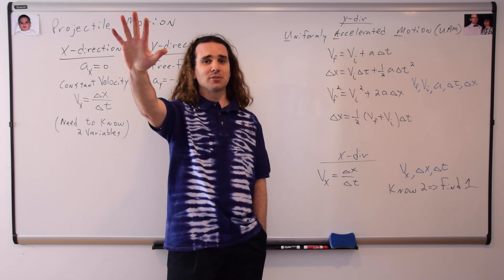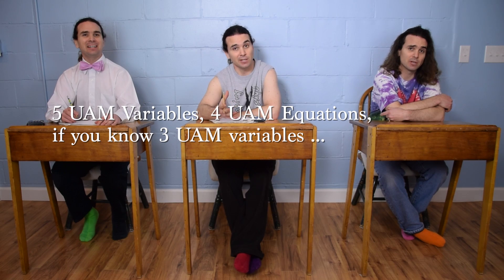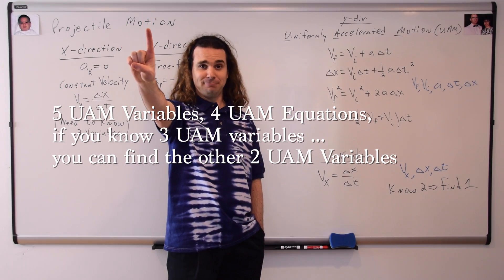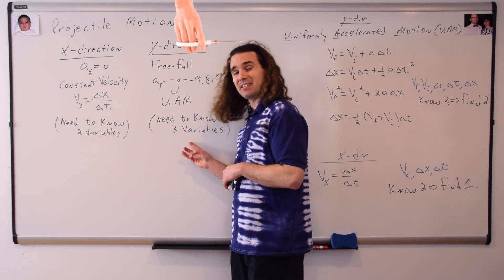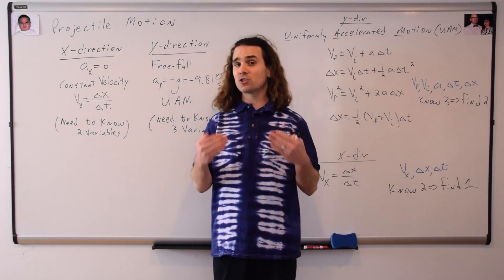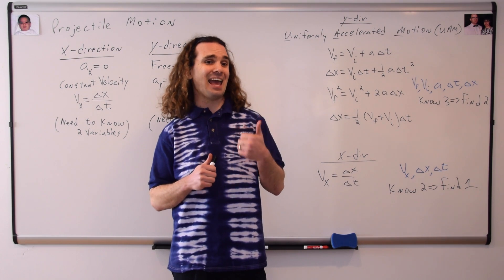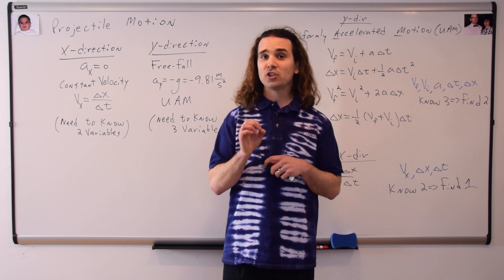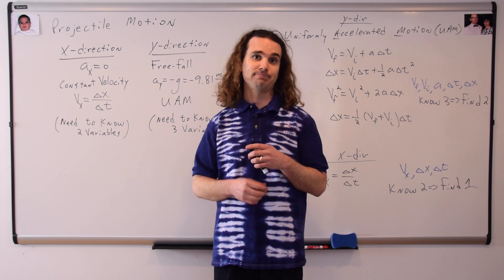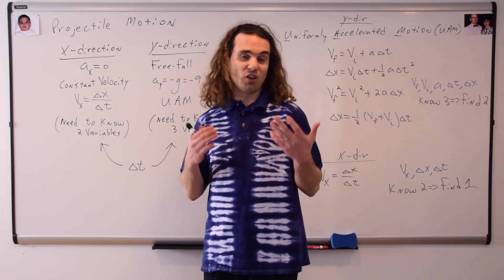Class, there are how many UAM variables? Five. And how many UAM equations? Four. And if you know three of the UAM variables, you can figure out the other two, which leaves you with one happy physics student. So in the y direction you need to know three variables, and in the x direction you only need to know two in order to solve the equations. Billy, which one of the UAM variables is a scalar? The only one that's a scalar is change in time. If you solve for the change in time in one direction, you can then apply that to the other direction, because change in time is a scalar and is independent of direction. The change in time is almost always what you're going to be solving for in a projectile motion problem, and then applying it to the other direction.